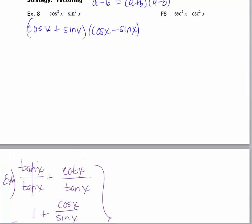Alright, let's look at the last one. Let's look at this practice problem 8. We've got the difference of two squares. So your a is secant and your b is cosecant. So we'll have secant x plus cosecant x times secant x minus cosecant x.